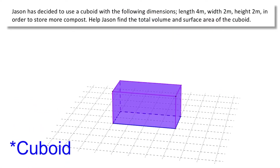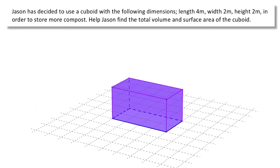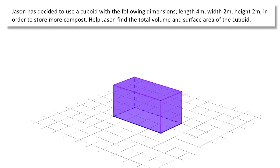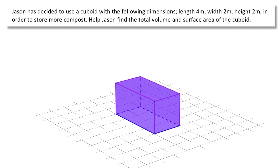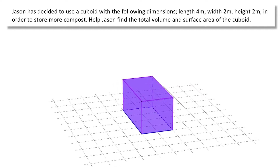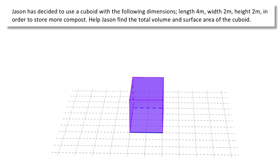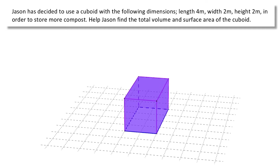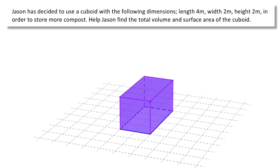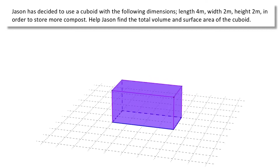Jason has decided to use a cuboid with the following dimensions because he figures he has too much compost for the cube: a length of 4 meters, a width of 2 meters and a height of 2 meters, in order to store more compost. Help Jason find the total volume and surface area of this cuboid.